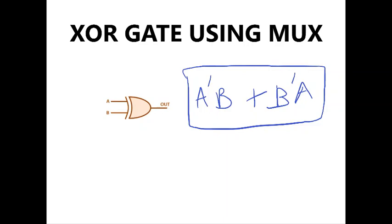That is why it is called an XOR gate or an exclusive OR gate. Only exclusively when both the inputs are different it will give a value of 1.